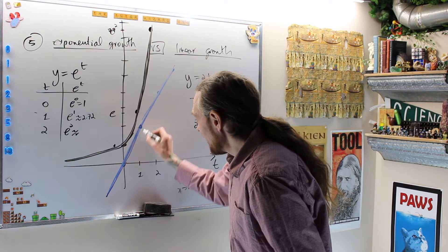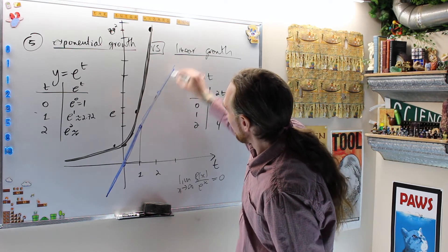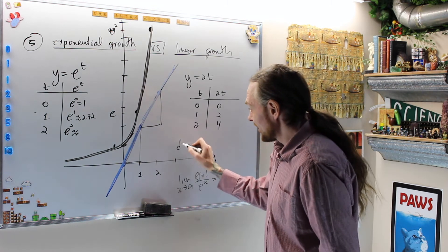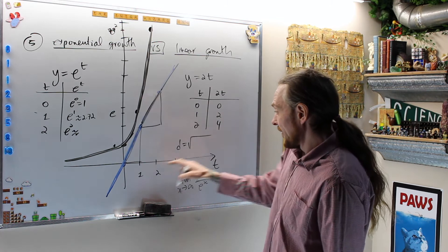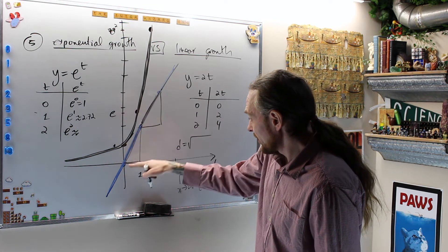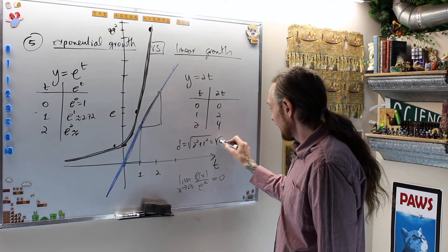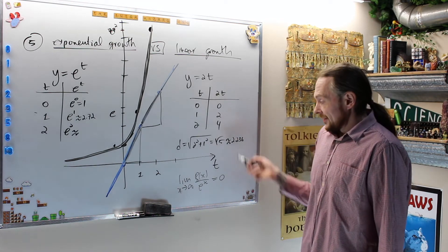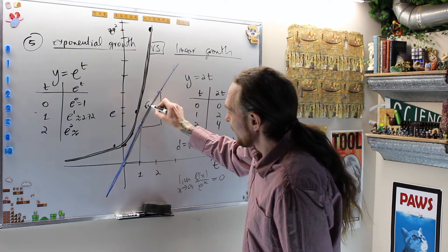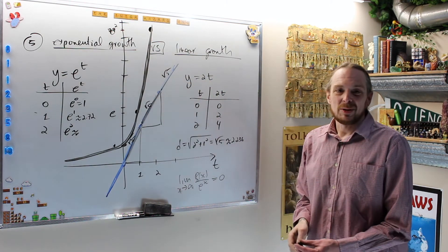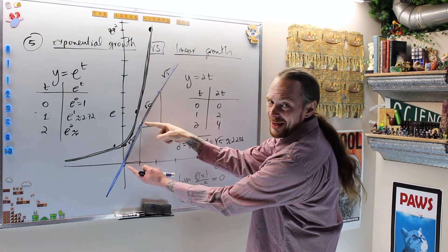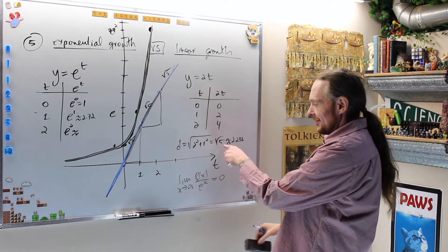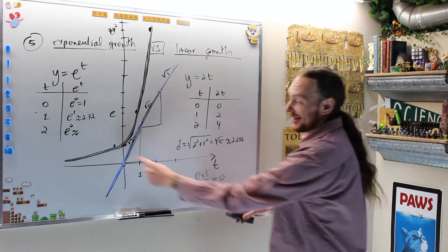Also notice: for the linear function, the distances between image points — the arc lengths between equally-spaced t-values — remain constant at every step, all equal to √5. For the exponential function, those distances keep growing. Let's quickly compute the arc length of y = e^t from 0 to 1.